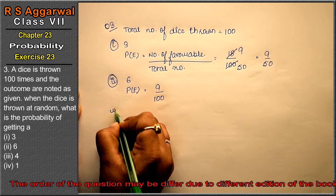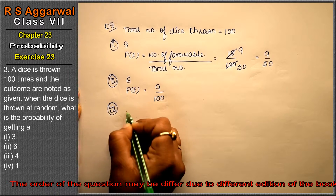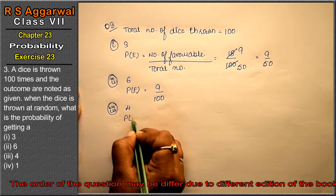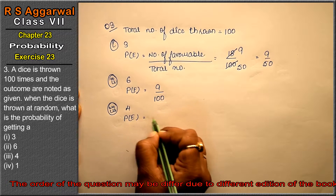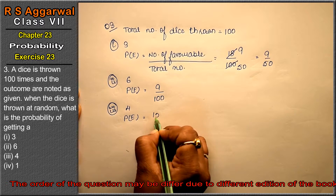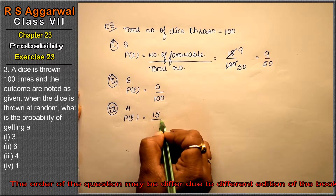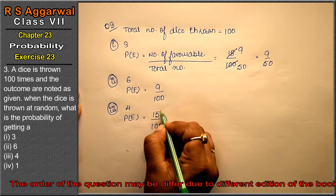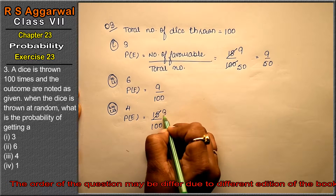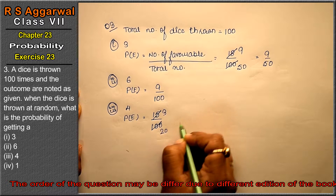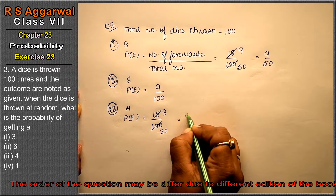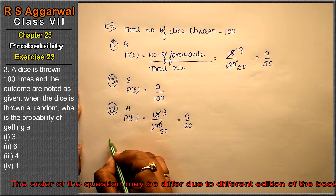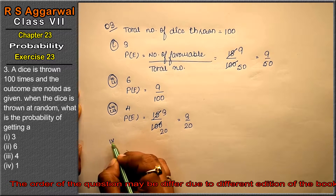In the third part, we are asked the probability of getting 4. The frequency of getting 4 is 15 out of 100 times. We can reduce: 5 threes are 15, 5 twenties are 100, so that means 3 upon 20 is the answer.